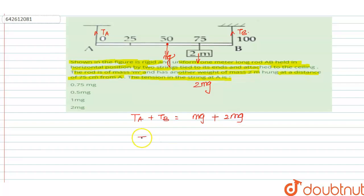Then we can write Ta plus Tb equals 3Mg. This is the first relation.